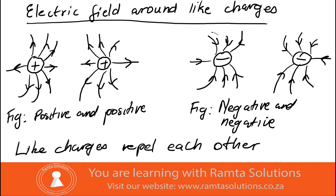Now here's a question: how do you think these diagrams would look if one charge had a bigger magnitude than the other? Think about it — if one had a bigger charge, how would the diagram look?